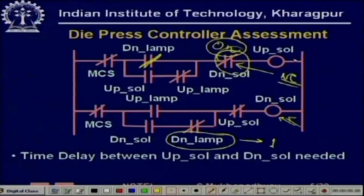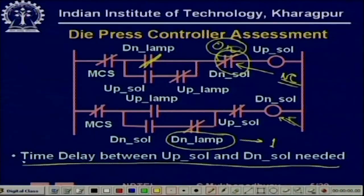It is very common that a time delay between the up solenoid and down solenoid is needed — that is, after the down lamp is on, we want a delay before the up solenoid becomes energized again. Such delays are very often needed in industrial operations, and today we will see how to create these delays. First, let us look at the timers which actually create these delays.